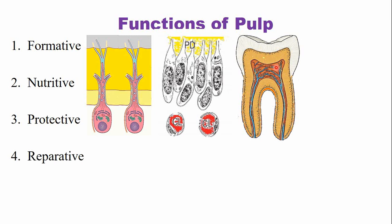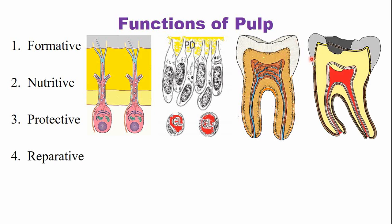The reparative function: new dentine is formed, as you can see in this picture, just below the carious dentine. This new dentine is either deposited by the pre-existing odontoblasts that are present at the periphery of the dental pulp, or by newly differentiated cells. The reparative dentine is also formed after a deep restoration or after a trauma.